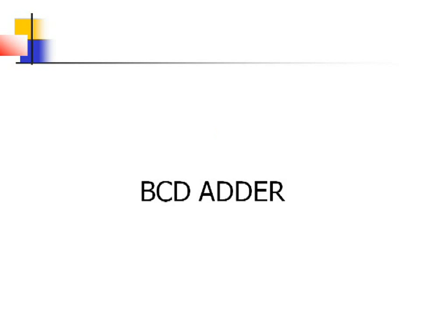Today we will start our discussion with BCD adder. Before going to this BCD adder, let us see what is a BCD number. As we have already discussed, BCD is nothing but Binary Coded Decimal and it comes under one of the categories of binary numbers. Every decimal digit is represented by using 4 binary bits in BCD format. For example, the decimal number 19 is represented using 8 bits — 1 is represented by 4 bits and 9 is represented by 4 bits.